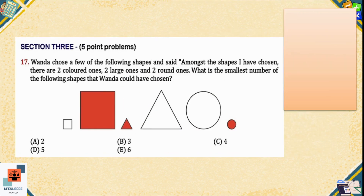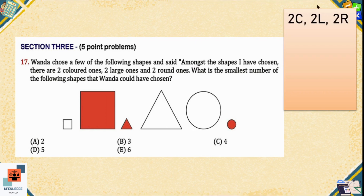Question 17: Wanda chooses a few of the given shapes and says: 'Among the shapes I have chosen, there are two colored ones, two large ones, and two round ones.' What is the smallest number of shapes that Wanda could have chosen? So she has to satisfy all three criteria: two colored, two large, and two round.